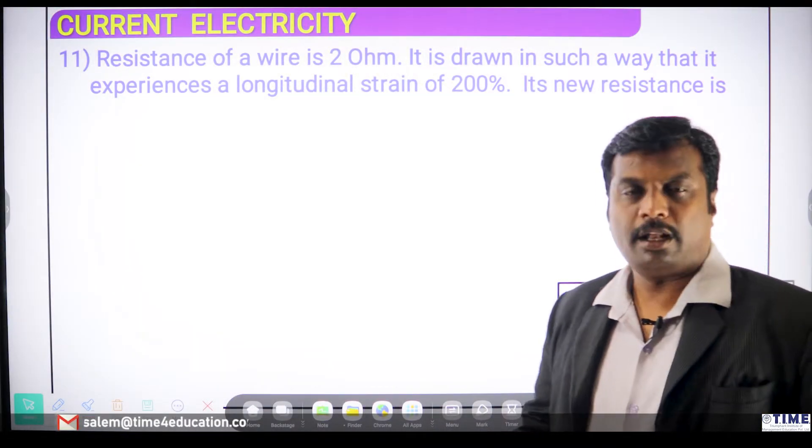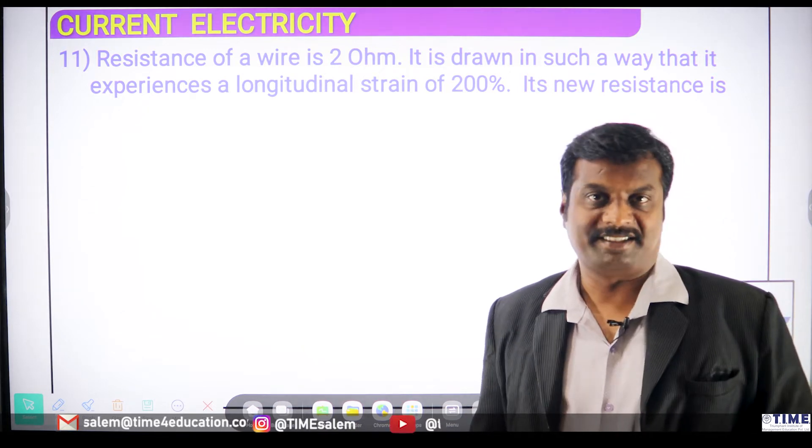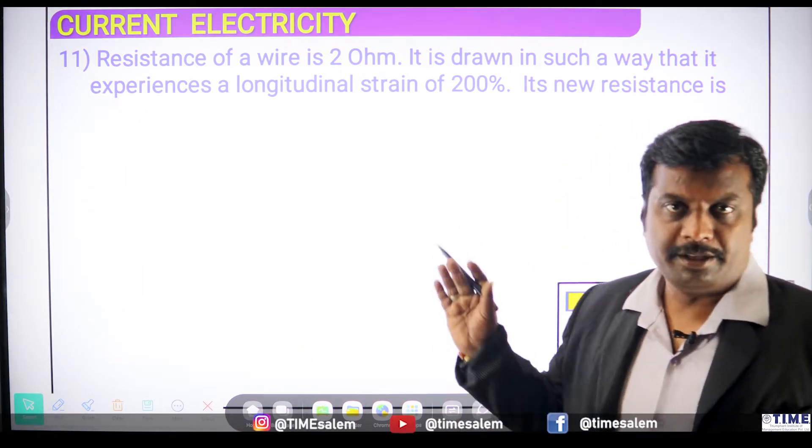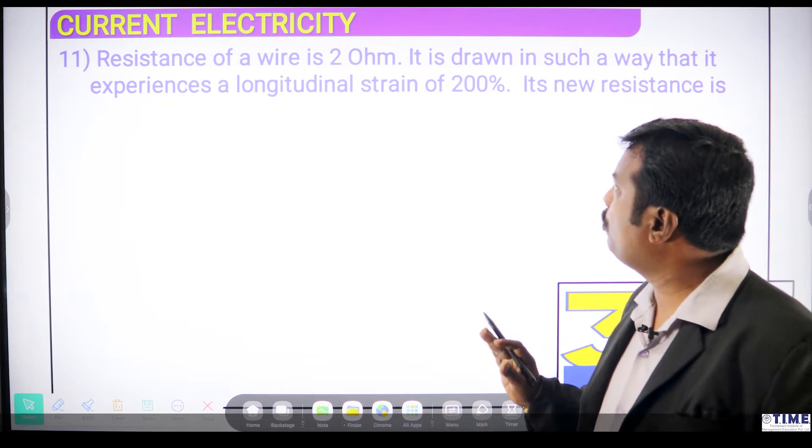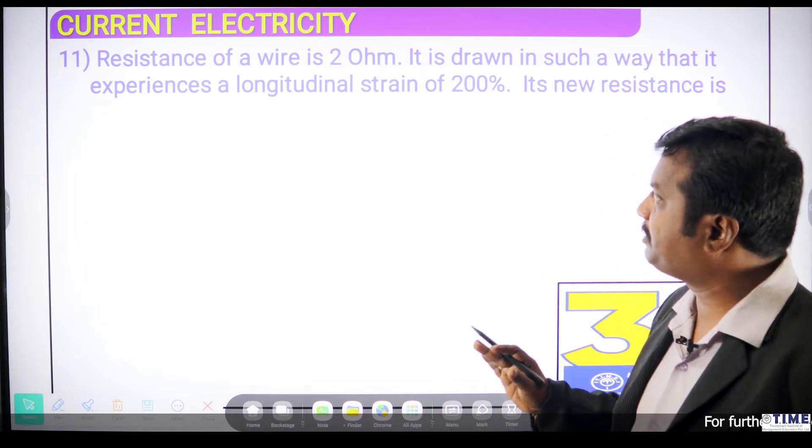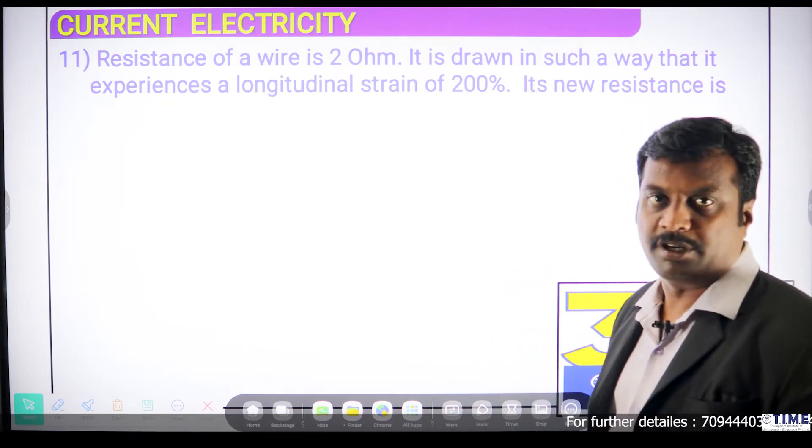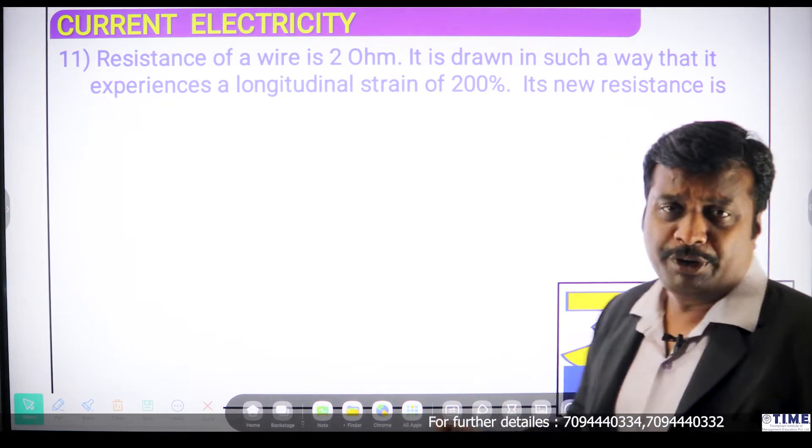Hi students, welcome to the class. Now, we will discuss some problems from current electricity. Let us read the question. The resistance of a wire is 2 ohm. It is drawn in such a way that it experiences a longitudinal strain of 200 percent. Its new resistance is?